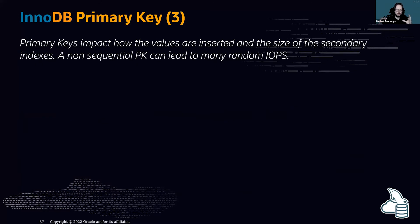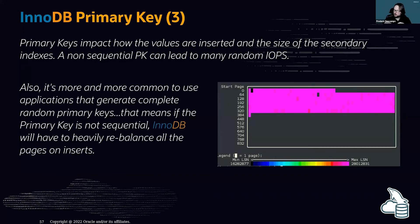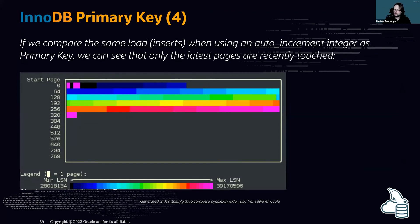A non-sequential primary key leads to many random IOPs. Here is a heat map of a table where every time data is inserted, almost everything is touched — because the data is non-sequential and InnoDB constantly has to rebalance the clustered index. This is very bad for IOPs and write operations.